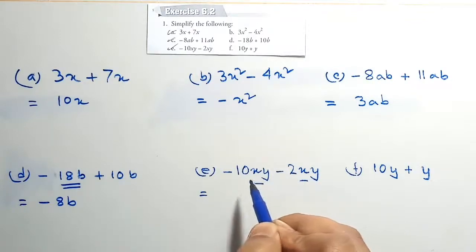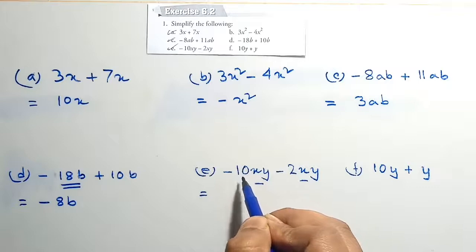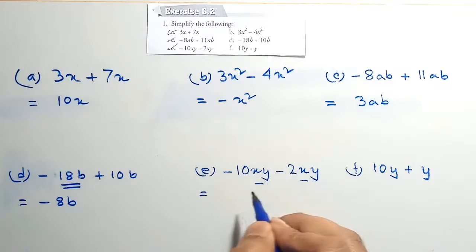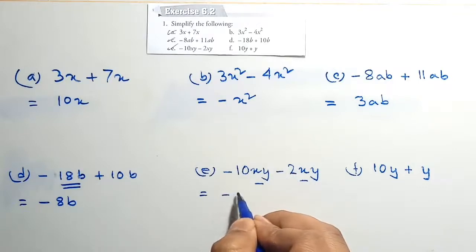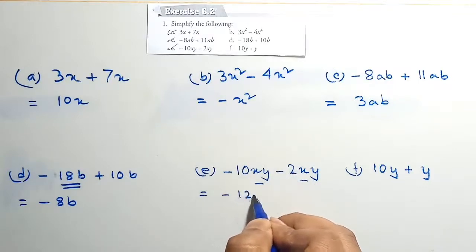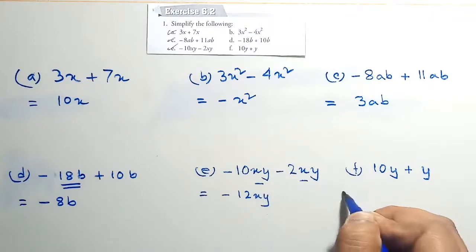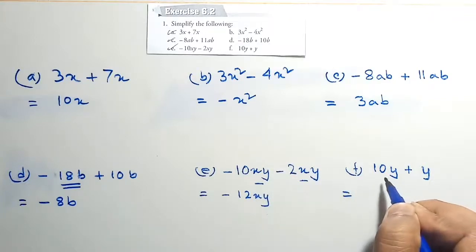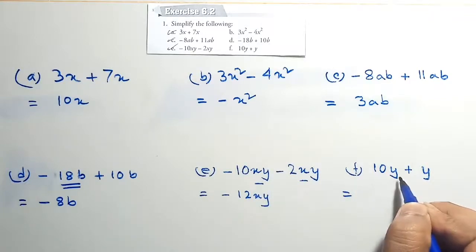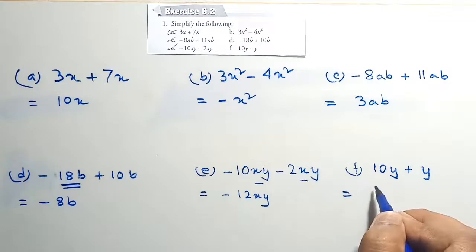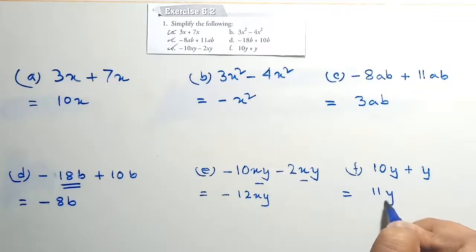Question E: minus 10xy minus 2xy — both are like terms, so minus 10xy plus minus 2xy equals minus 12xy. Question F: 10y plus y equals 11y.